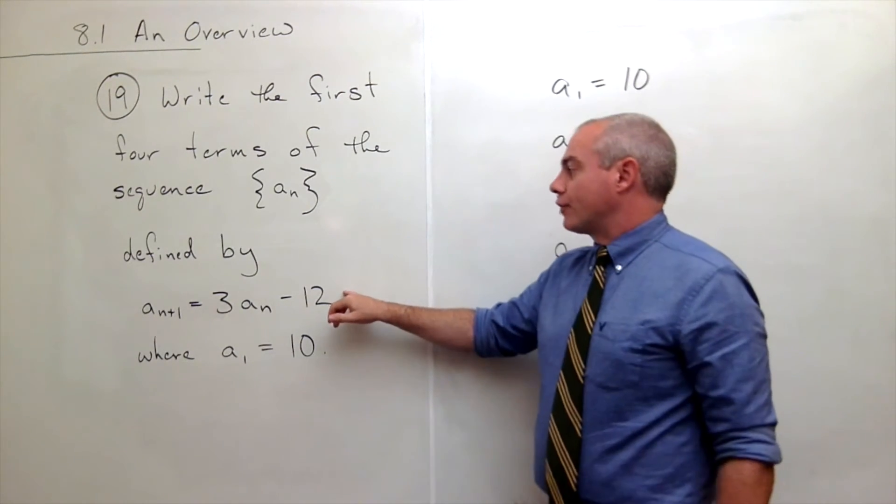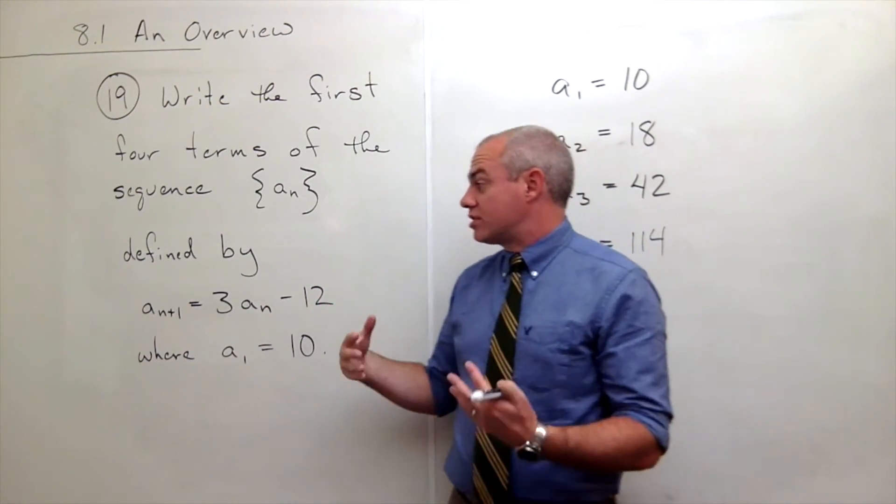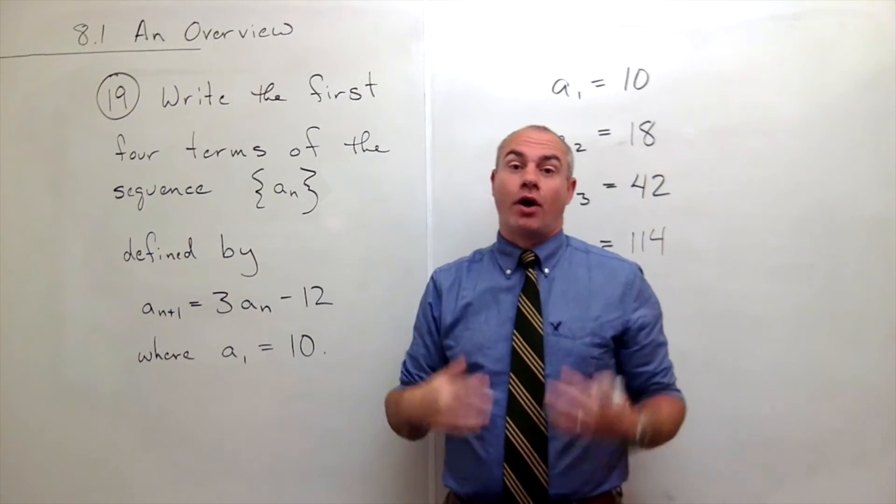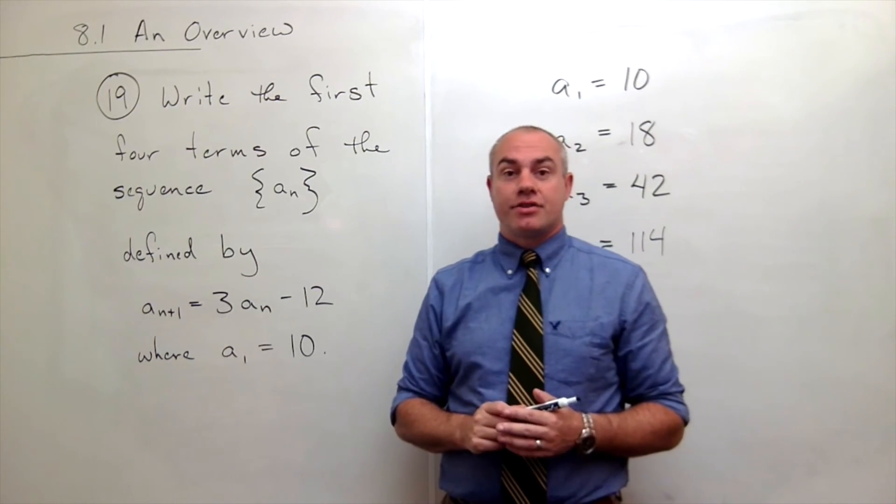So whenever you have a recurrence relation like this, just follow the rule again and follow the rule again and follow the rule again and that generates your sequence for you.